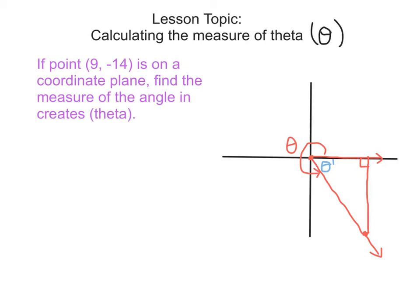Remember: the reference angle is formed by the terminal side of the original angle and the nearest x-axis — which is here. So between the terminal side and the x-axis, this is theta prime. To calculate it, we fill in the known side lengths. We went from (0, 0) over to 9 on the x-axis, so this side is 9 units.